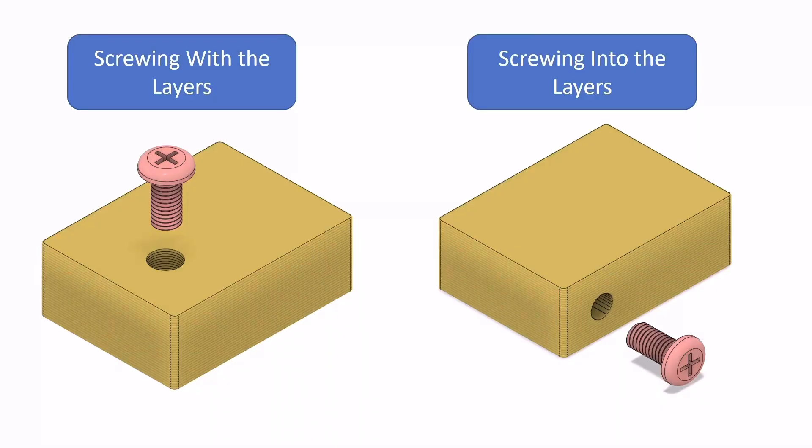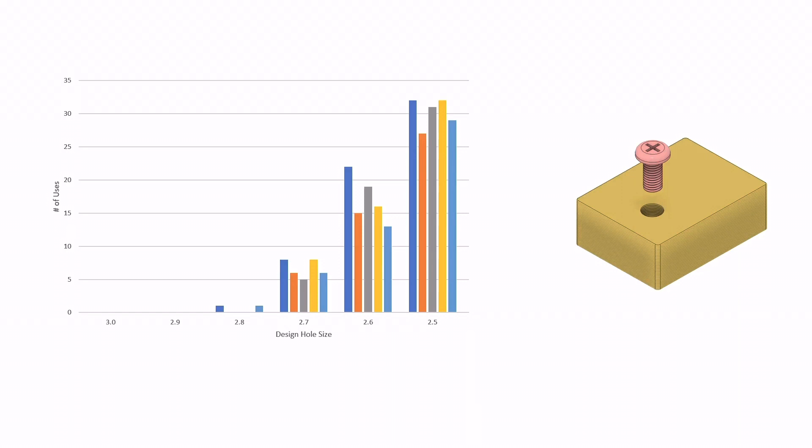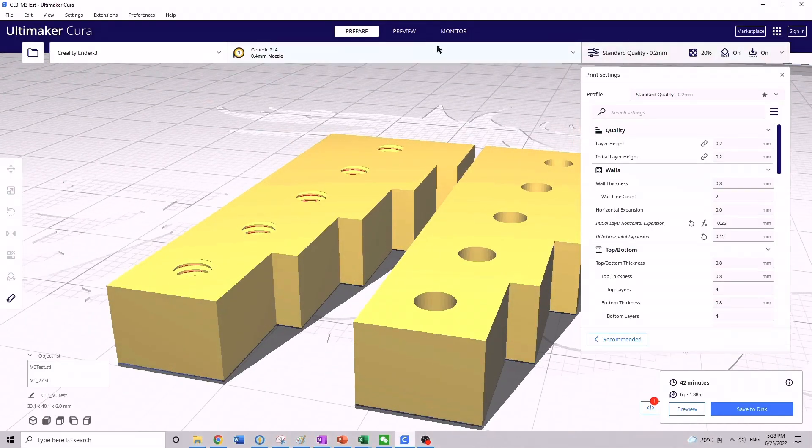Let's take a look at the results. So far, what we've been testing has been the scenario on the left where we're screwing with the 3D printed layers. I've taken our test results and plotted them on this graph. We can see that the smaller the hole size, the more amount of uses we can get out of the hole. But the trade-off there being the smaller the hole, the harder it is to get the screw started into the part.